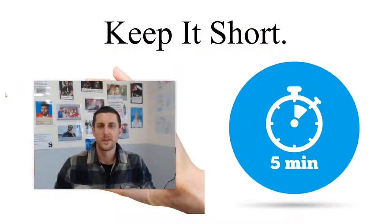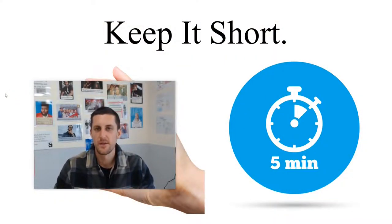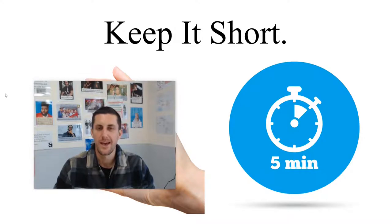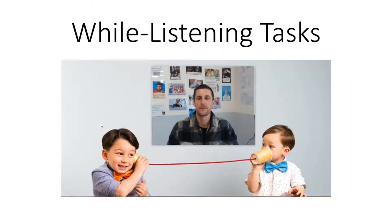The biggest key for a pre-listening section of a listening activity is to keep it short. At most, it should only be about five minutes long. So after you've set the context or tried to receive students' own opinions, it's time to get into the task — the while-listening task.